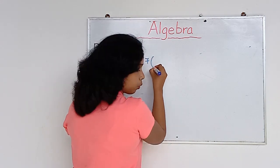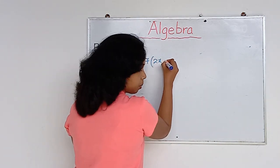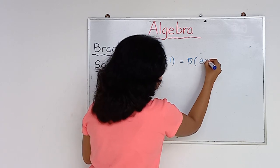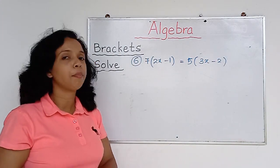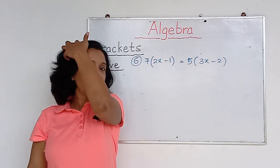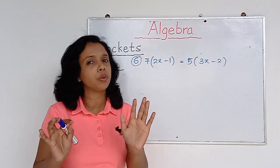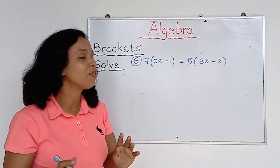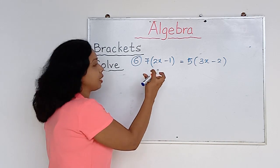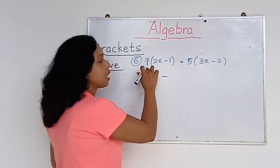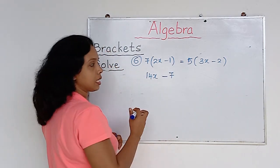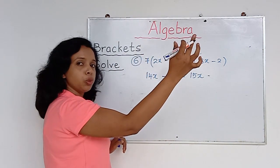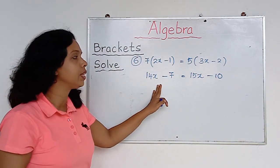Question number six — a little longer: 7 times bracket (2x − 1) equals 5 times bracket (3x − 2). Earlier we had a bracket on one side; now we have brackets on both sides. Solve both brackets first: 7 times 2x is 14x, 7 times minus 1 is minus 7; 5 times 3x is 15x, and 5 times minus 2 is minus 10.